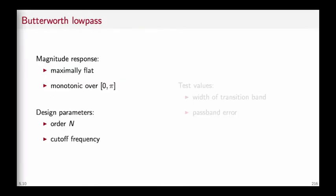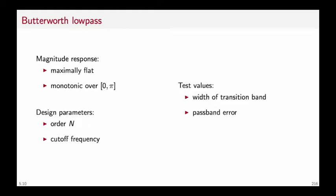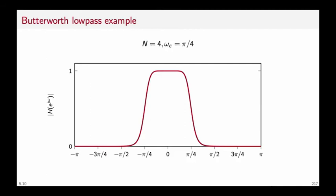Let's look at a few classic filters from the analog world, concentrating on the low-pass prototype. The first filter is the Butterworth low-pass. The Butterworth filter has a magnitude response which is maximally flat and monotonic over the zero-to-pi interval. The design parameters are simply the order of the filter and the desired cut-off frequency. You run the algorithm and get a prototype filter, then test it with respect to the width of the transition band and the pass-band error. If any parameters do not fulfill the specifications, you increase the order and run the algorithm again. The frequency response is a monotonic curve that decays smoothly from zero to pi — shown here as order 4 with a cut-off frequency of pi over 4.